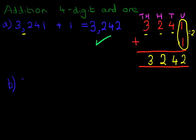What is 6,789 plus one? 6,789 plus one. Now again, the first thing we do is we rewrite the question in the vertical format. So let's do that.